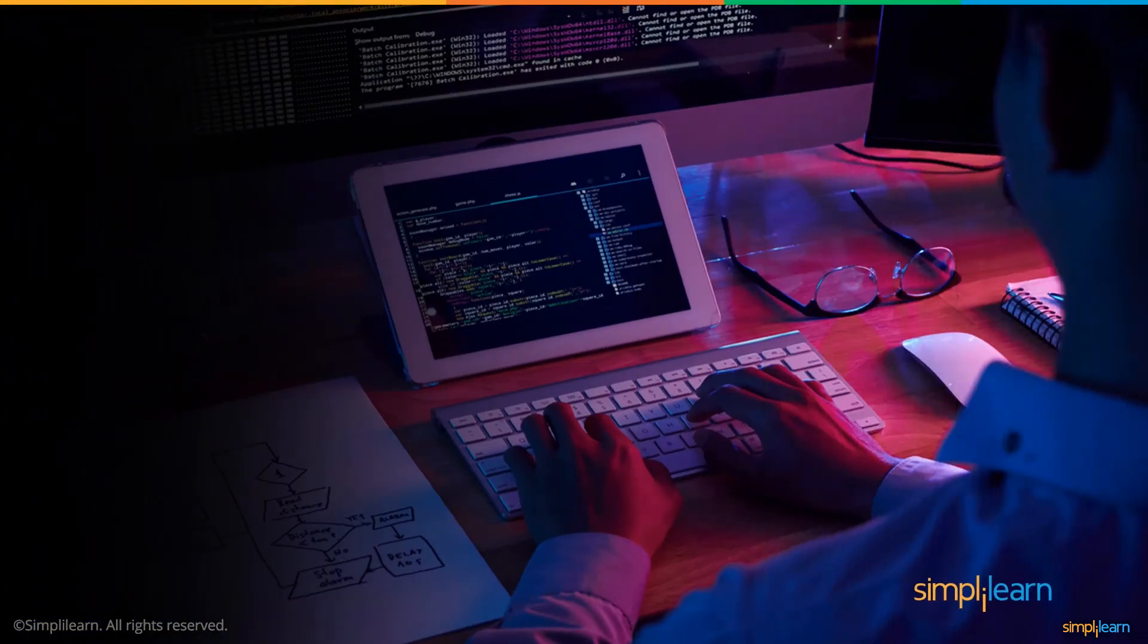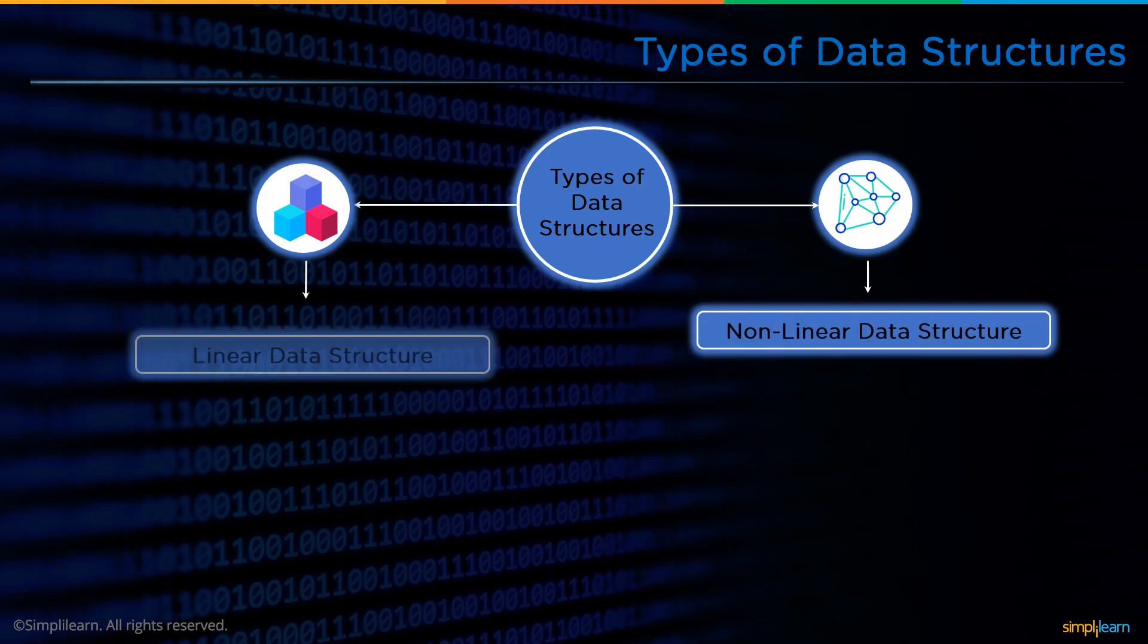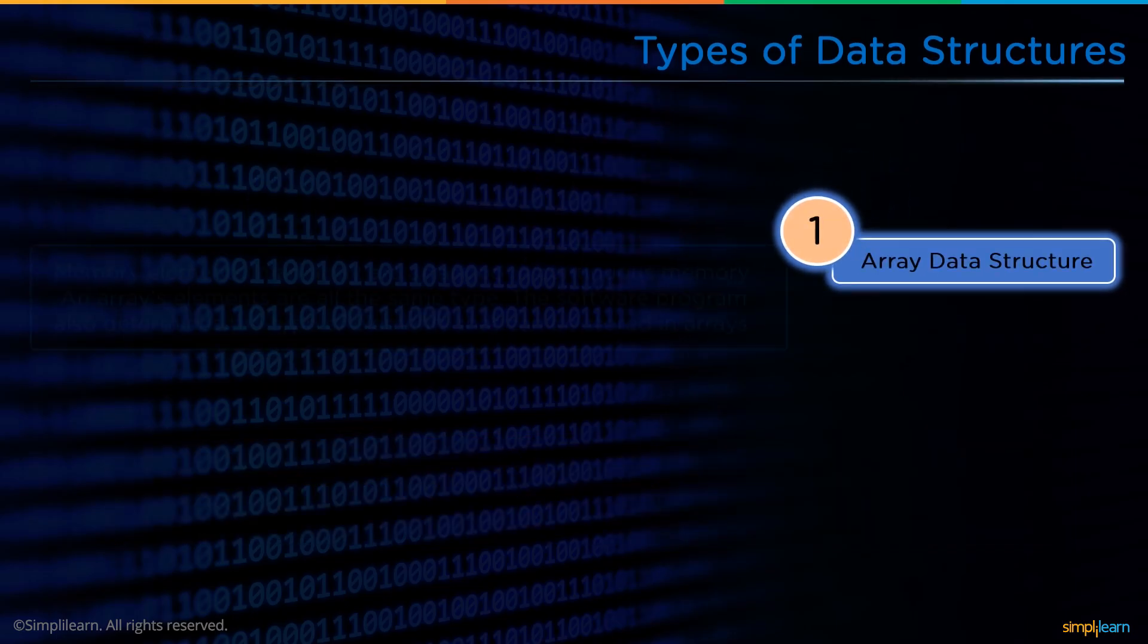Following that, we will look at some different types of data structures. The first type is the linear data structure. The elements in the linear data structure are arranged subsequently, one after the other. They are simple to implement because the elements are arranged in a specific order.